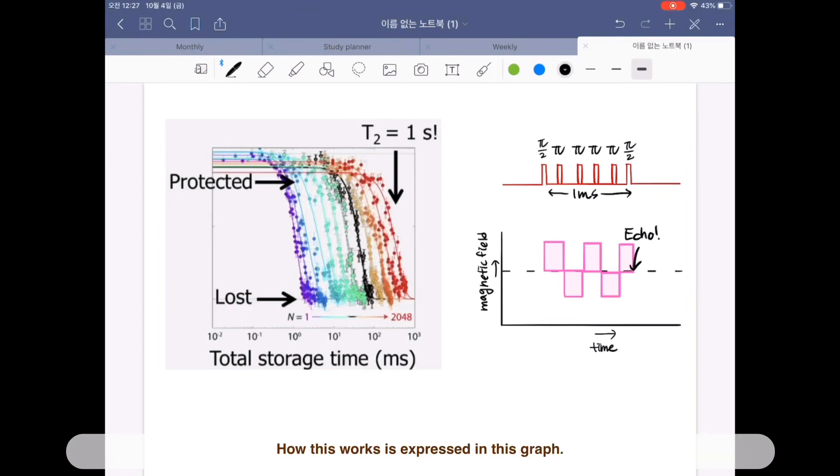How this works is expressed in this graph. When we make the electron spin in a superposition and apply more and more pulses, then the electron spin is protected longer and longer.